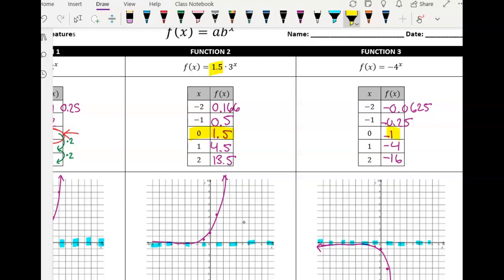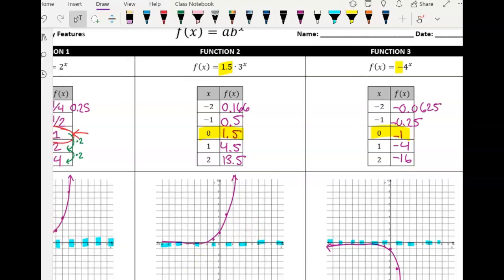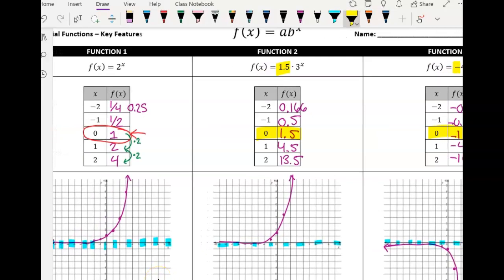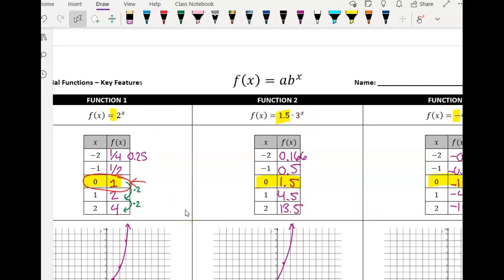If we take a look, that negative is really not part of that four. Here, our Y intercept is one. If we go back to that original form that's up top, notice this A value here, this is actually your Y intercept. So we can actually tell our Y intercept by just looking at that equation.